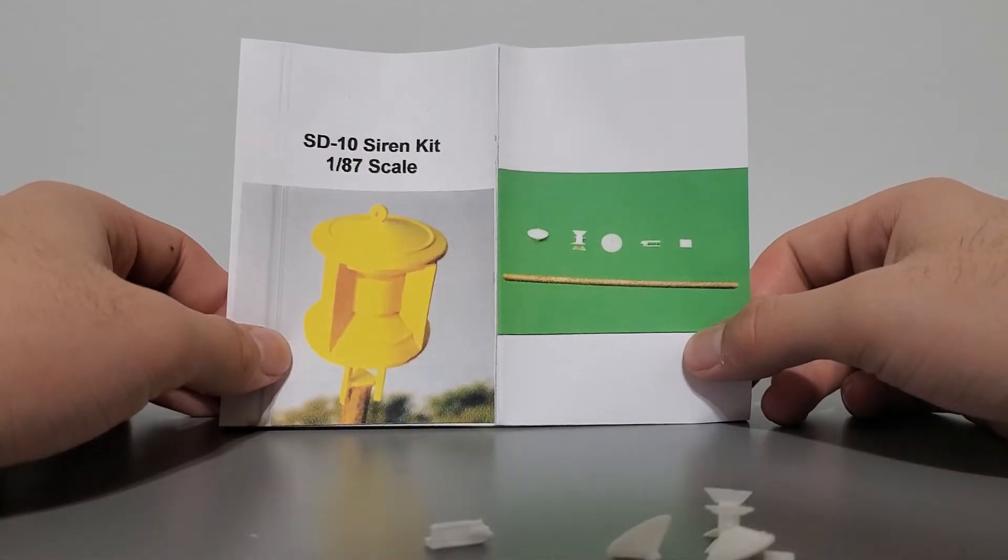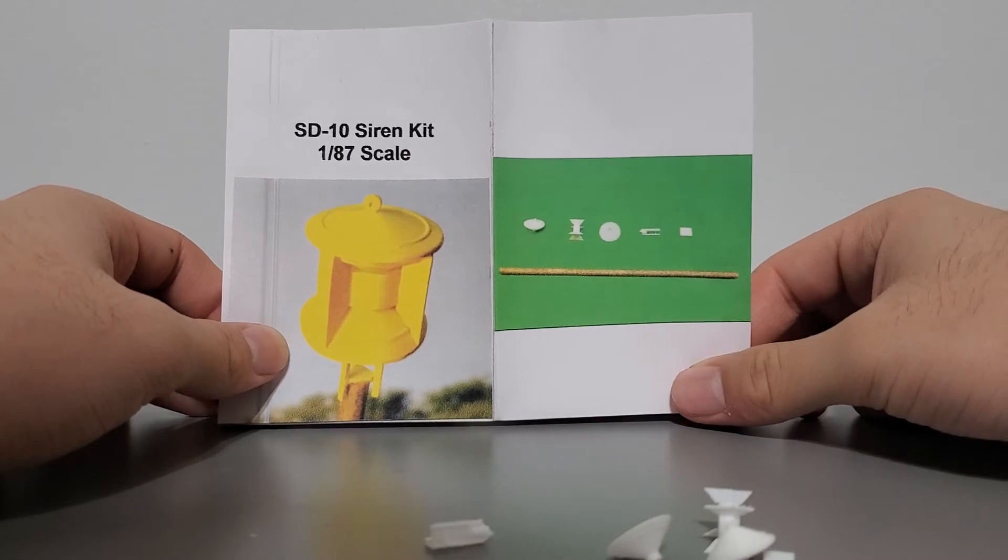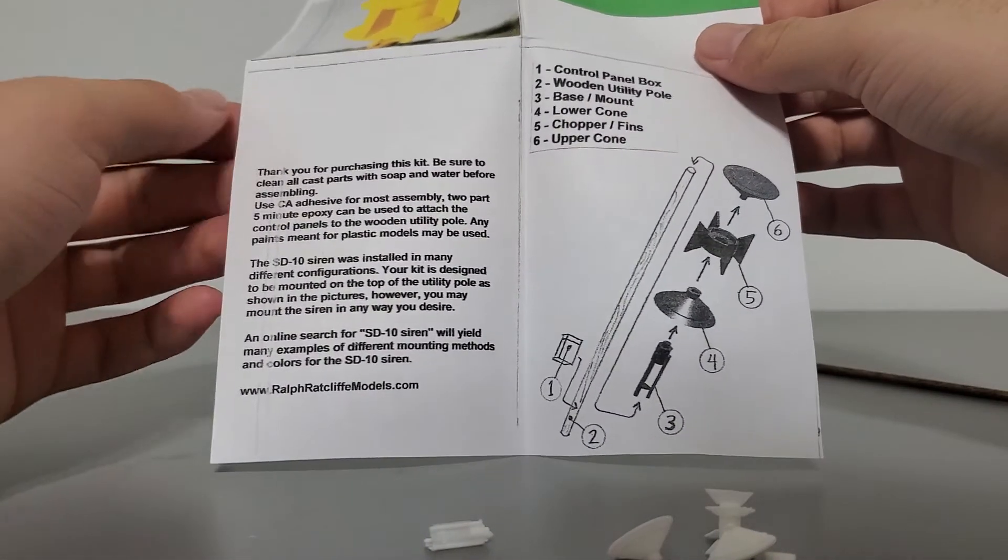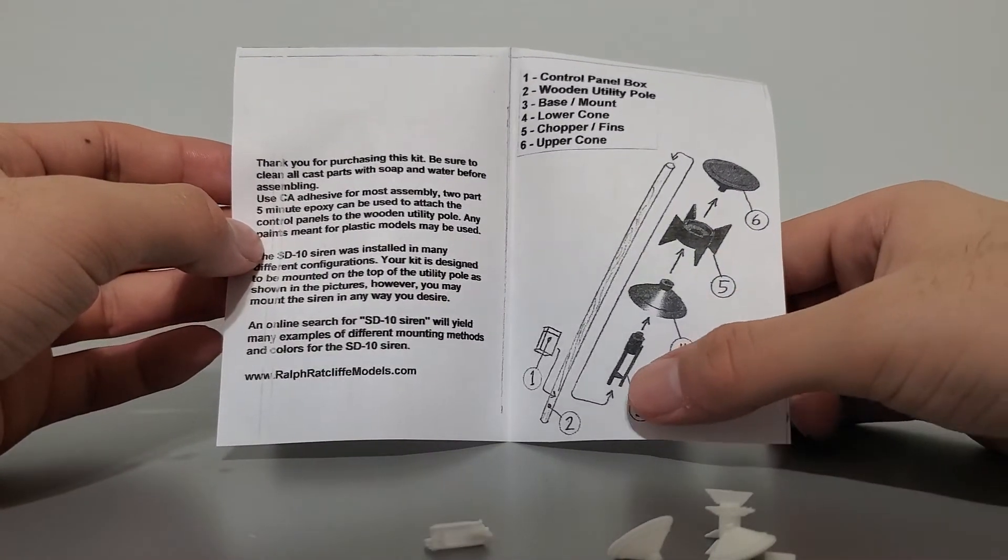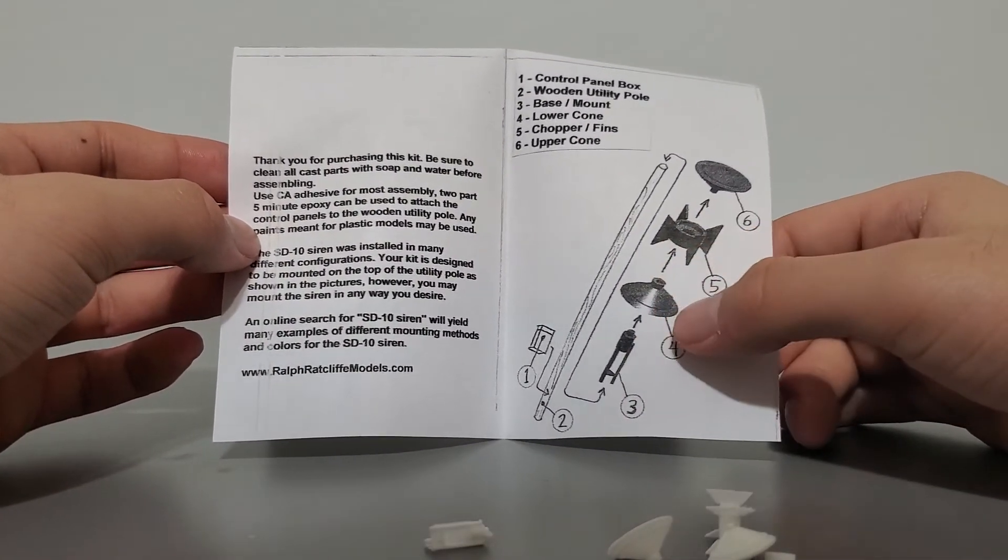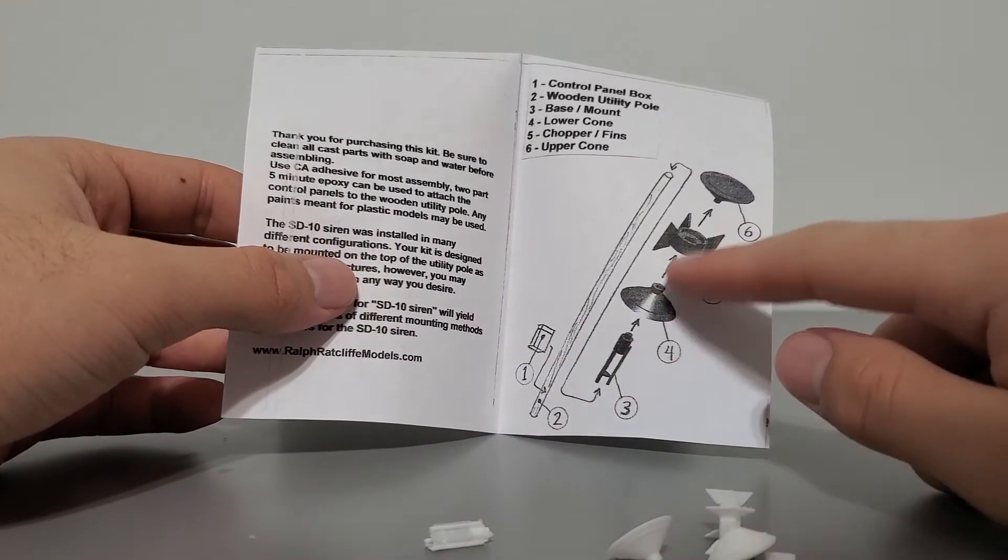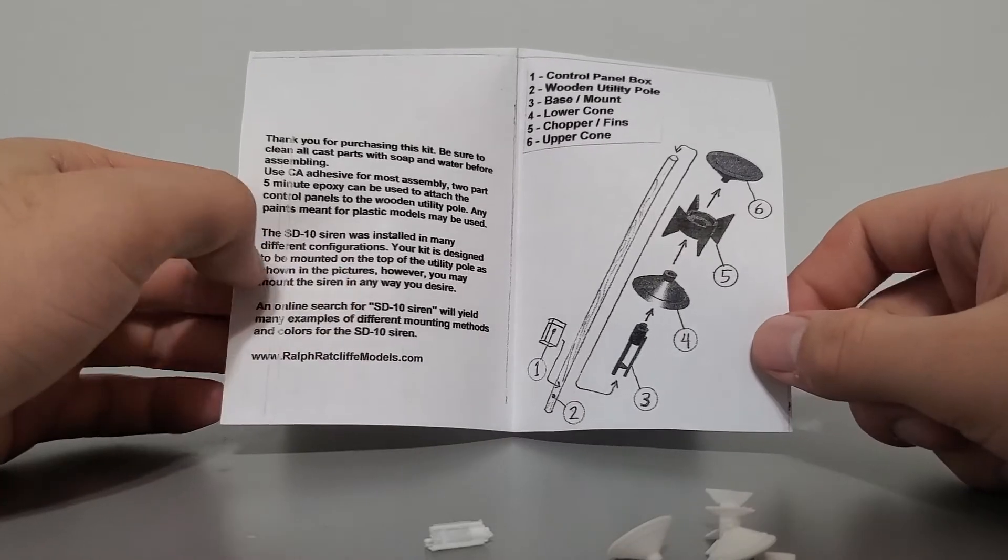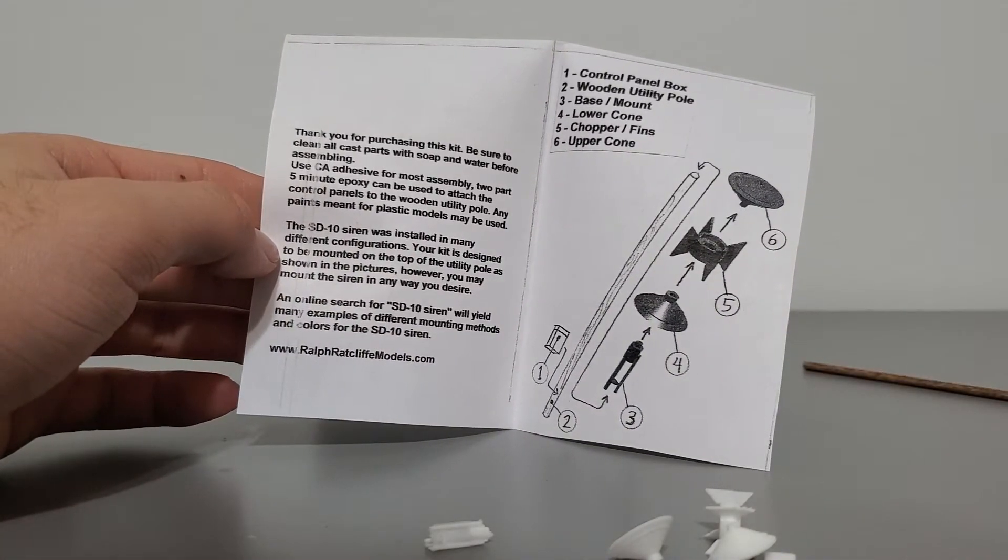So here's just the cover, the front cover and the back cover of the instructions. Really cool how they're in color, I like the green background here. And here is just some context and a pretty nicely done instruction set on how to build the model. I really like the way that the diagram is like 3D modeled here, it looks pretty cool. And I think this would help for someone who isn't familiar with this type of siren.